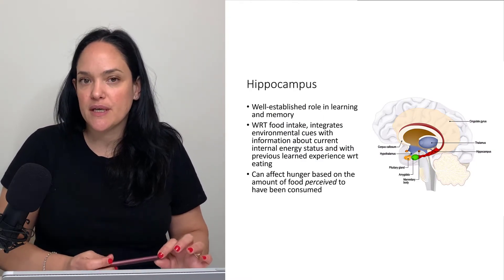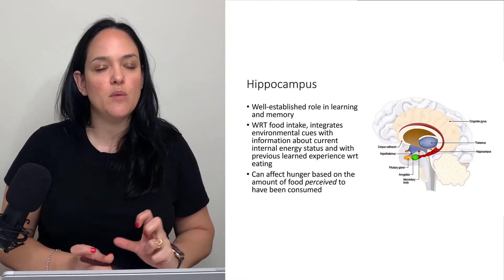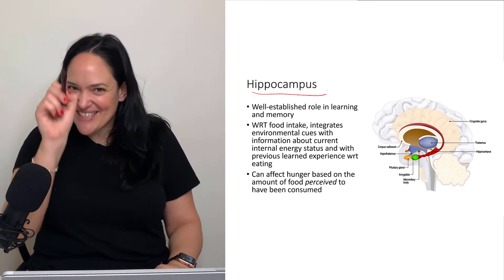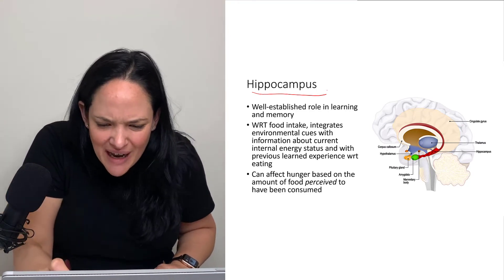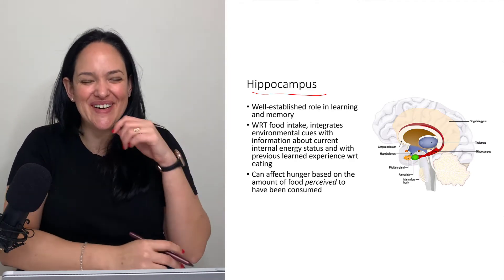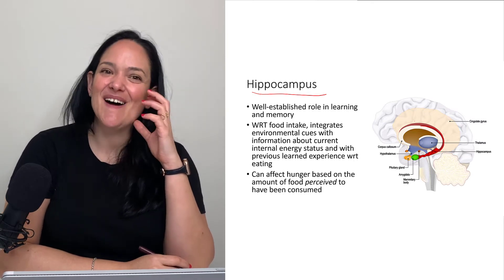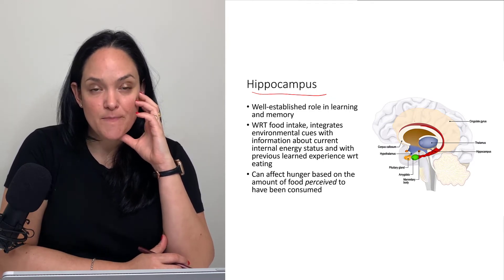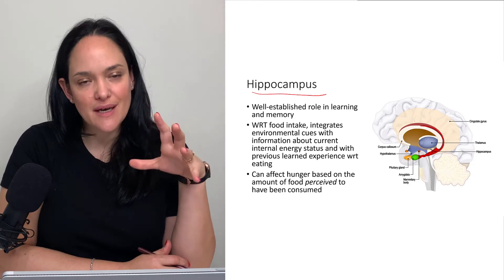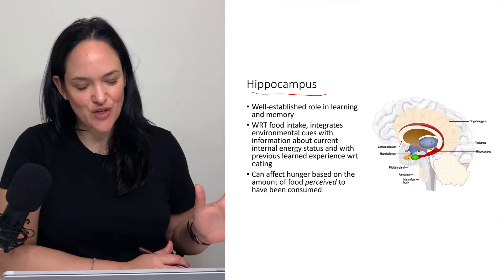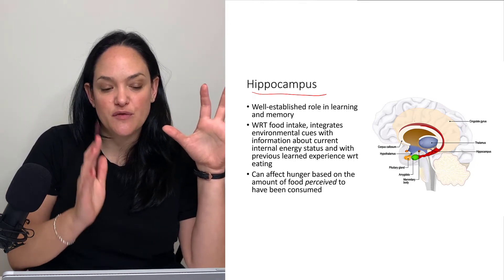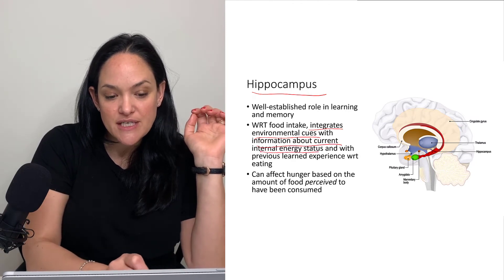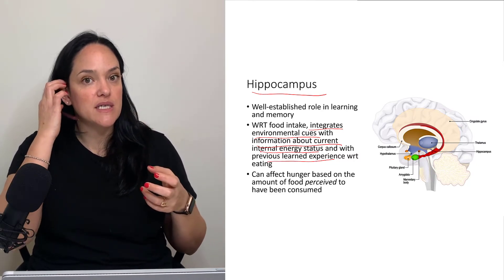Another area important in the regulation of food intake that's not only homeostatic is the hippocampus — the word means 'seahorse,' and it has a well-established role in learning and memory. What does the hippocampus do with respect to feeding? It integrates environmental cues with information about current energy status and with previous learned experience with respect to eating.